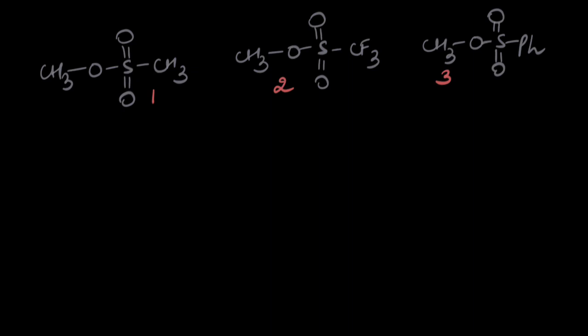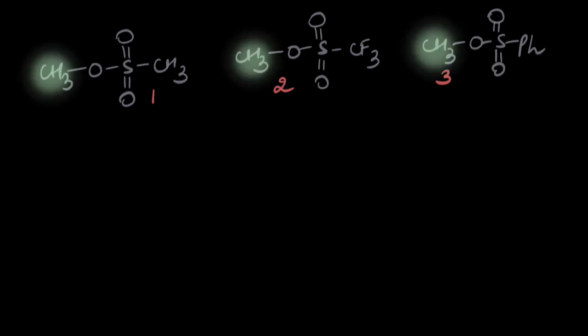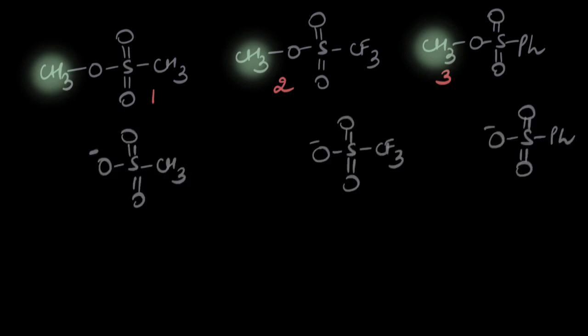What do we see in this question? We see how the leaving group is different in each case, but the carbon that is being attacked is the same in each case. Let's start comparing which of the following leaving groups would be the most stable. In each case, the negative charge resides on the oxygen atom.